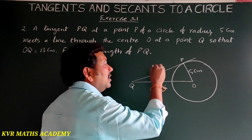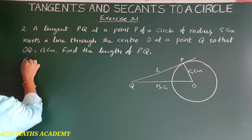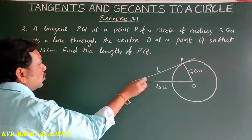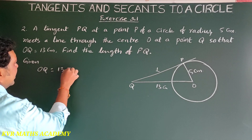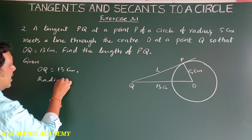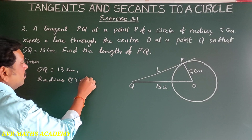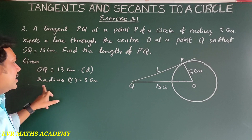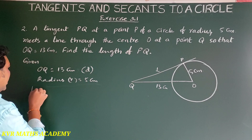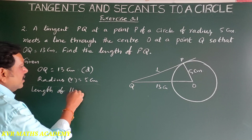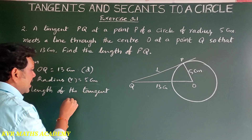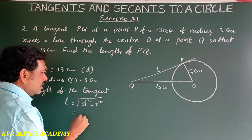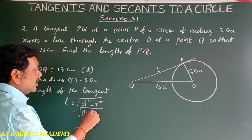The distance OQ is equal to 13 centimeters — that is D. The radius R is equal to 5 centimeters. The length of the tangent L is equal to the formula: L equals root of D squared minus R squared.